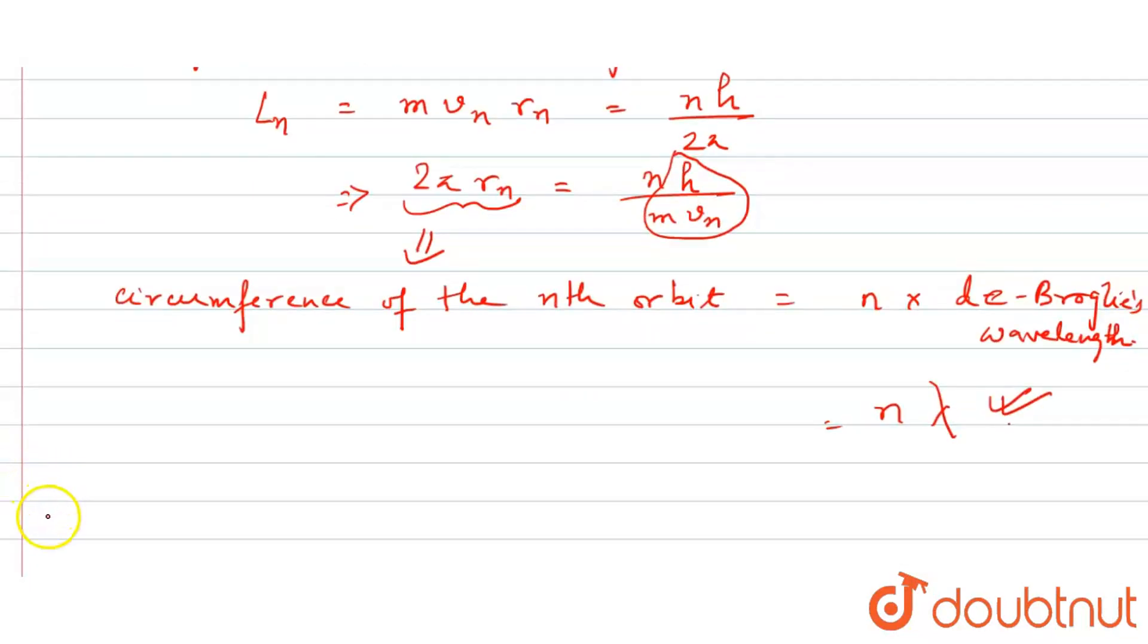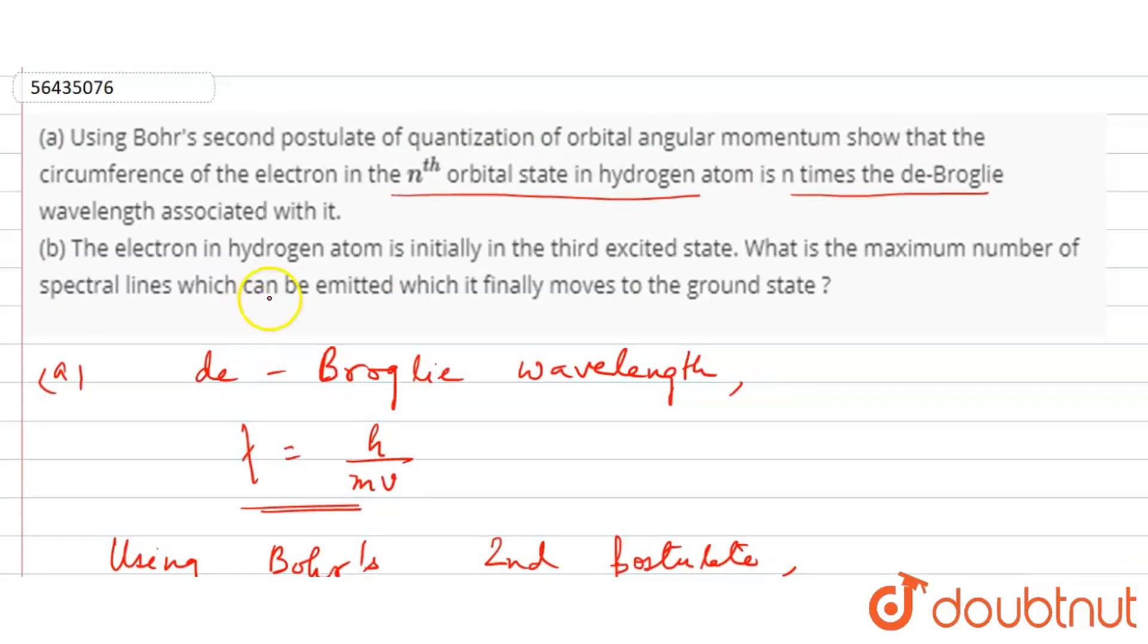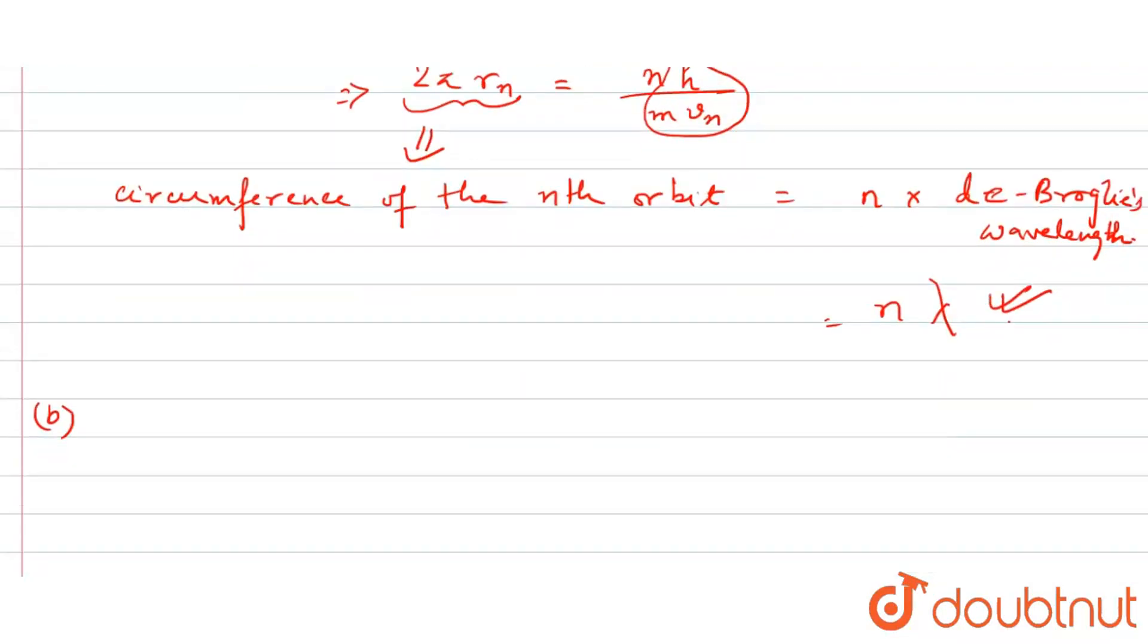Second part, we can see what we've asked. The electron in hydrogen atom is initially in the third excited state. What is the maximum number of spectral lines which can be emitted which finally moves to the ground state? Let's see how it will be solved.